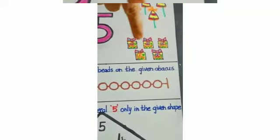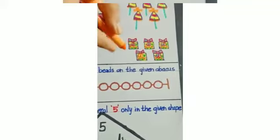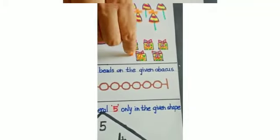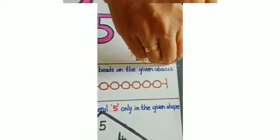Now what are these? Yes, gift boxes. Now start counting gift boxes: 1, 2, 3, 4, and 5. 5 gift boxes. Now children, next question.